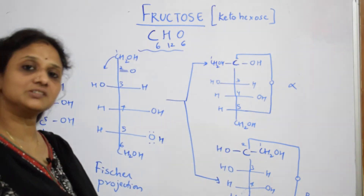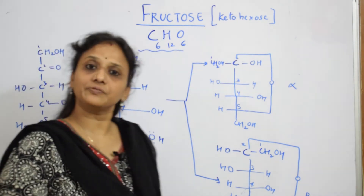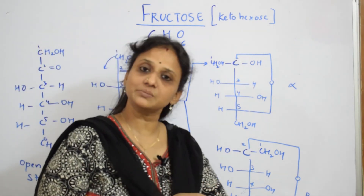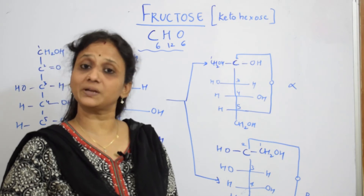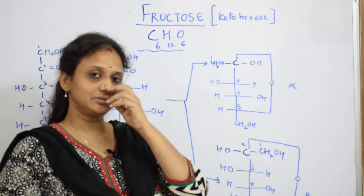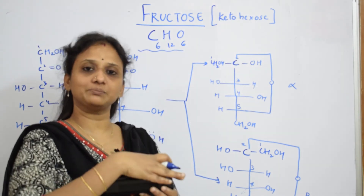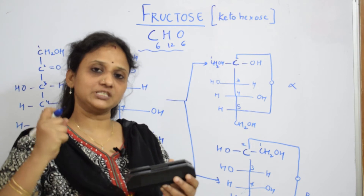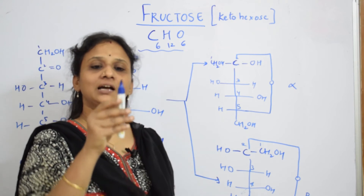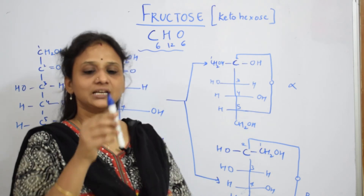Now observe carefully — fructose has asymmetric carbons. When something has asymmetric carbons, it is going to show optical activity, as I mentioned in the earlier video. Optical activity means: when you take this compound in a polarimeter and allow a plane polarized light to pass through it, it will rotate that plane polarized light either clockwise or anti-clockwise.